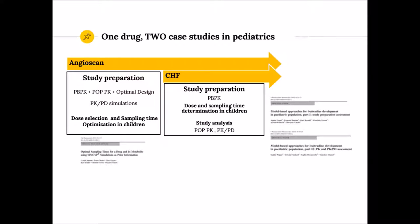Initially, two indications were considered for Ivabradine in children: one to reduce heart rate when children have to undergo an angioscanner, and one for children with chronic heart failure. For the first potential indication, the angioscanner, the clinical pharmacokinetics and pharmacometrics group at Servier was involved in dose selection and sampling time optimization, and this work has been published in Clinical Pharmacokinetics. For the second potential indication, chronic heart failure, we were also involved in dose and sampling time determination, and this work has been published recently in JPK-PD.